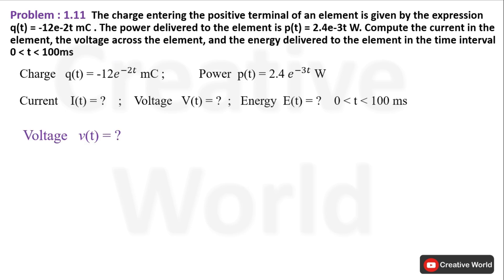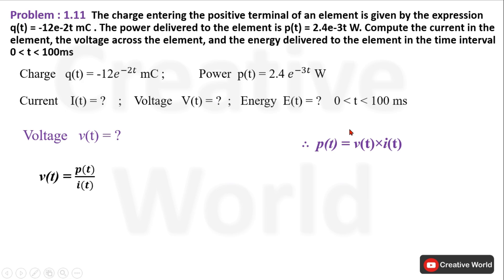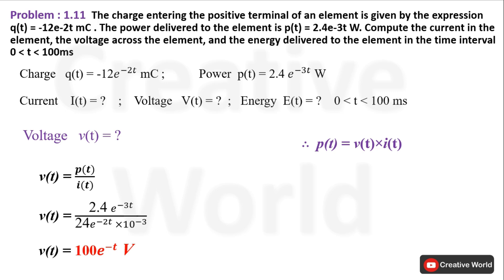Next, we will solve for the voltage. The formula for voltage uses the fact that power is given in this scenario and current was calculated in the earlier slide. From this equation, voltage equals power divided by current. By solving it, we get voltage equal to 100e^(-t).